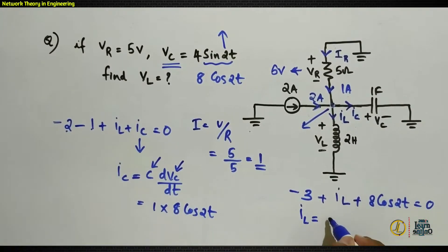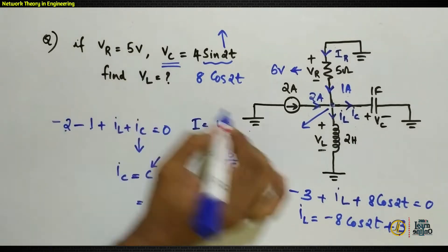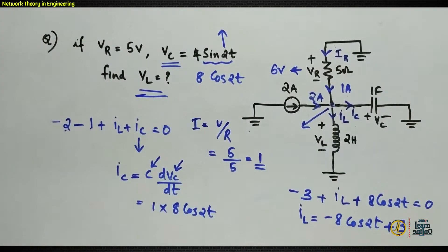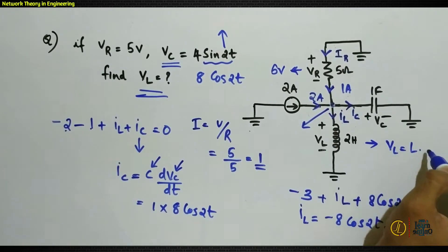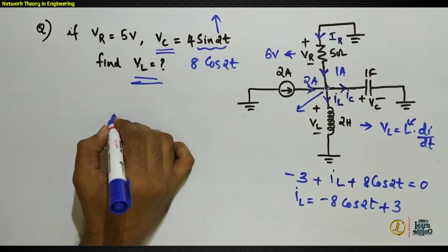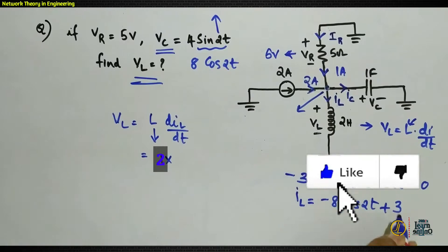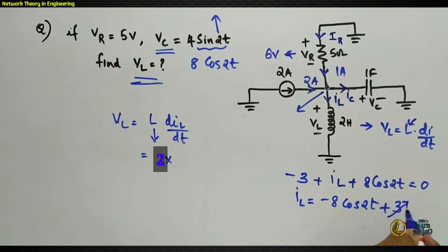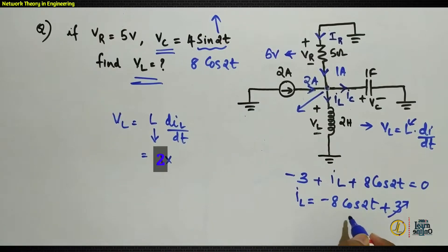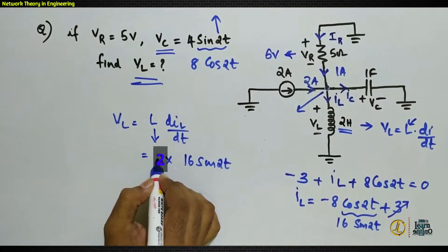From the modified KCL, IL = −8 cos 2t + 3. To find VL, use the inductor V-I relationship: VL = L · dIL/dt. The inductance is 2 henrys, and the derivative of IL = −8 cos 2t + 3 is 16 sin 2t. Therefore, VL = 2 × 16 sin 2t = 32 sin 2t.